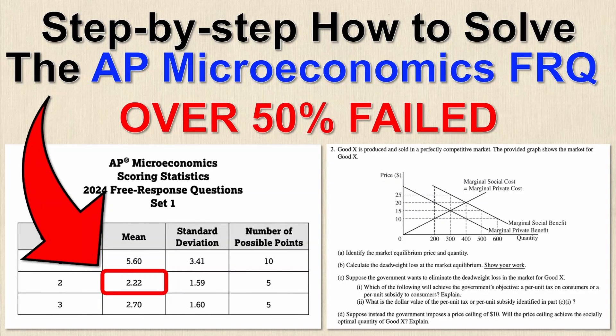Today we'll be looking at an AP Microeconomics short answer question and it's out of five marks total, but the average score on this was 2.22 out of five, so a lot of people did pretty poorly on this question. I'm going to show you in this exact example how to get a perfect five out of five score, so if you see any questions like this you're going to be able to solve it step by step and see exactly what the examiner is looking for.